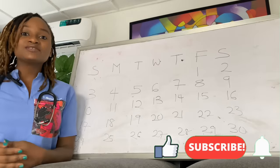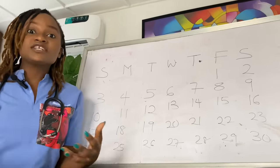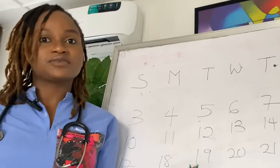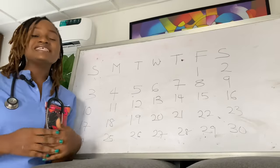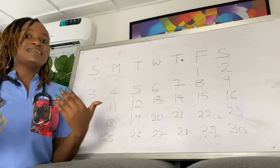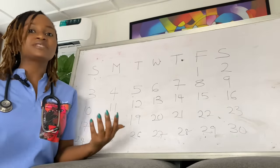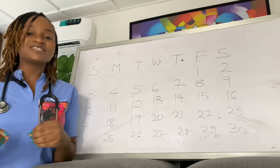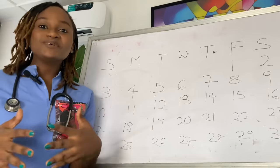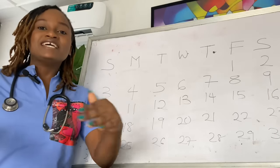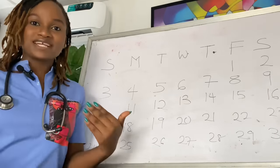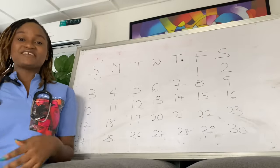When trying to get pregnant, it's important to know when you're ovulating because ovulation is when your ovary releases an egg for fertilization. Knowing your safe days is also very important — these are the days you can have unprotected intercourse with very reduced chances of getting pregnant. Your fertile window is the number of days in your cycle when you are most likely to get pregnant.